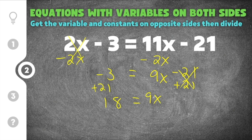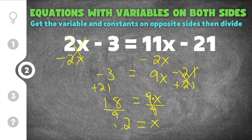Now remember, this is like saying 9 times x. So the opposite of that would be to divide by 9. We're going to divide by 9 so the 9s cancel, and then whatever you do to one side, you do to the other — you also have to divide by 9 on this side. So now we have x on this side, and 18 divided by 9 is 2. So our solution is 2 equals x.